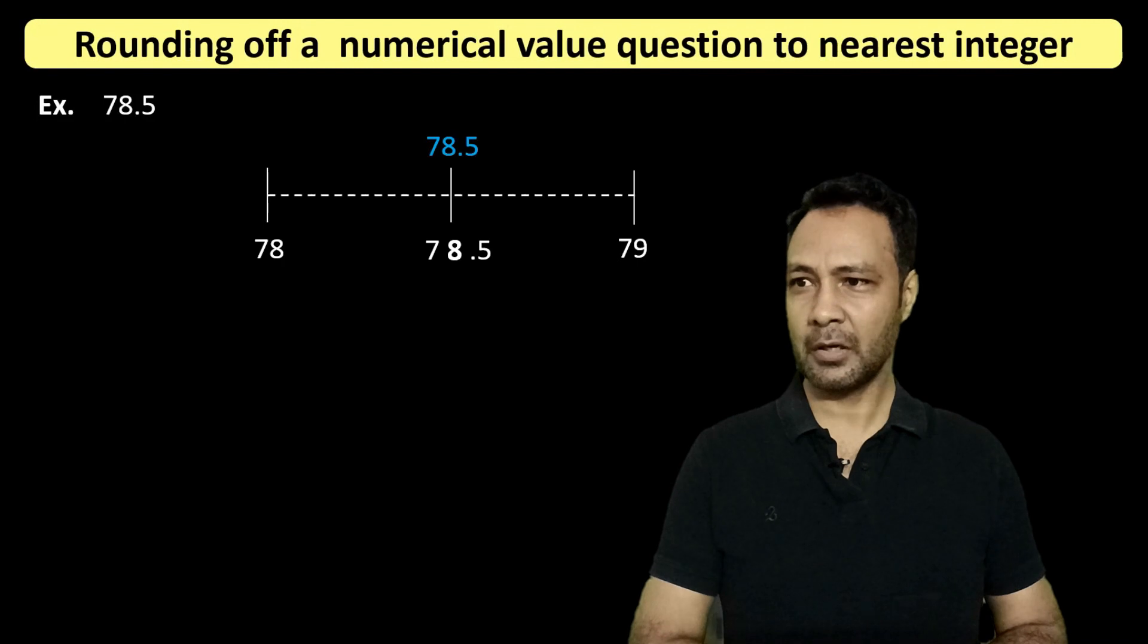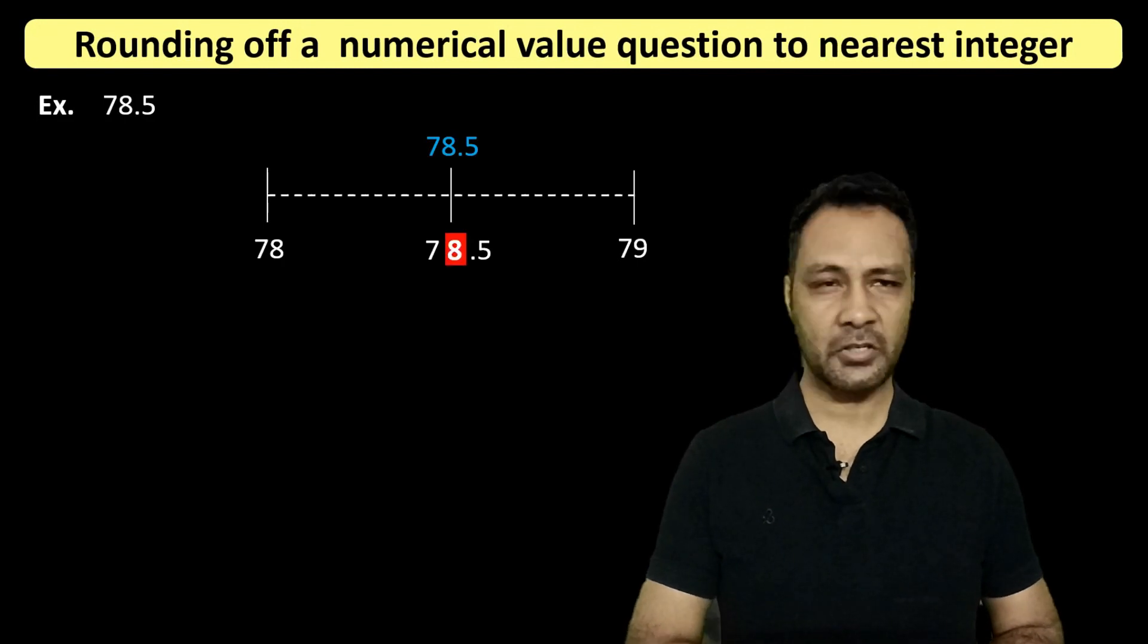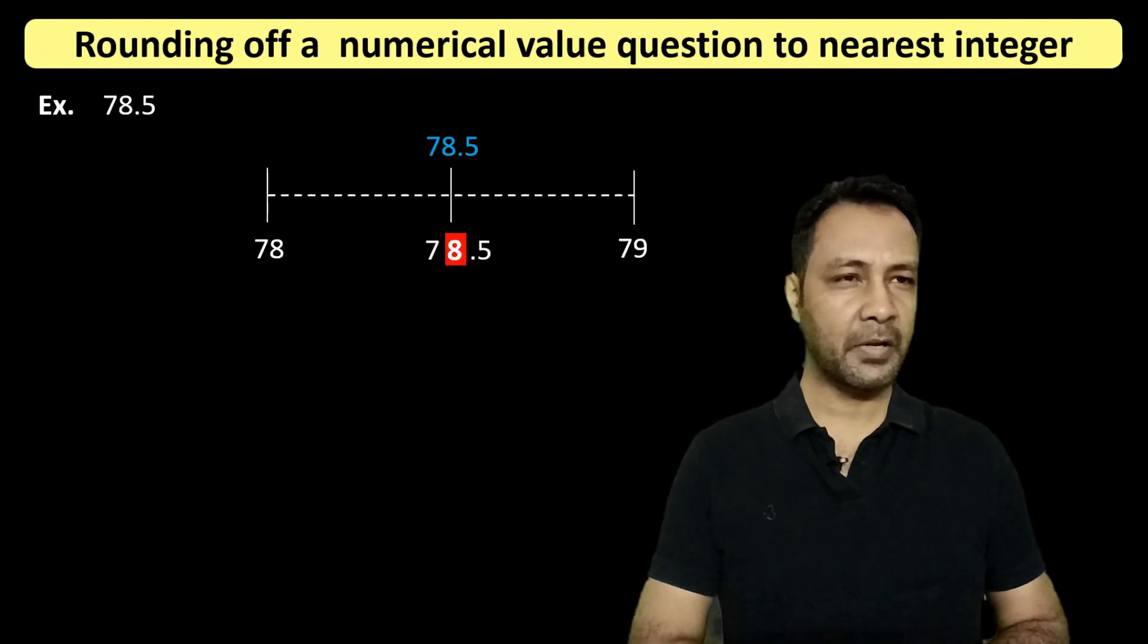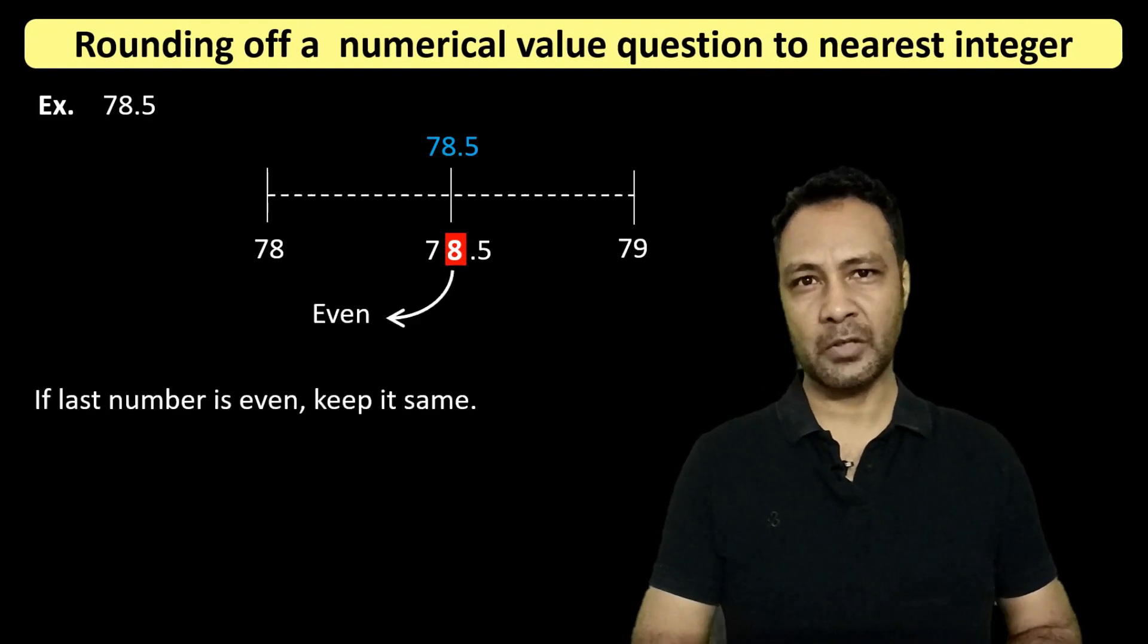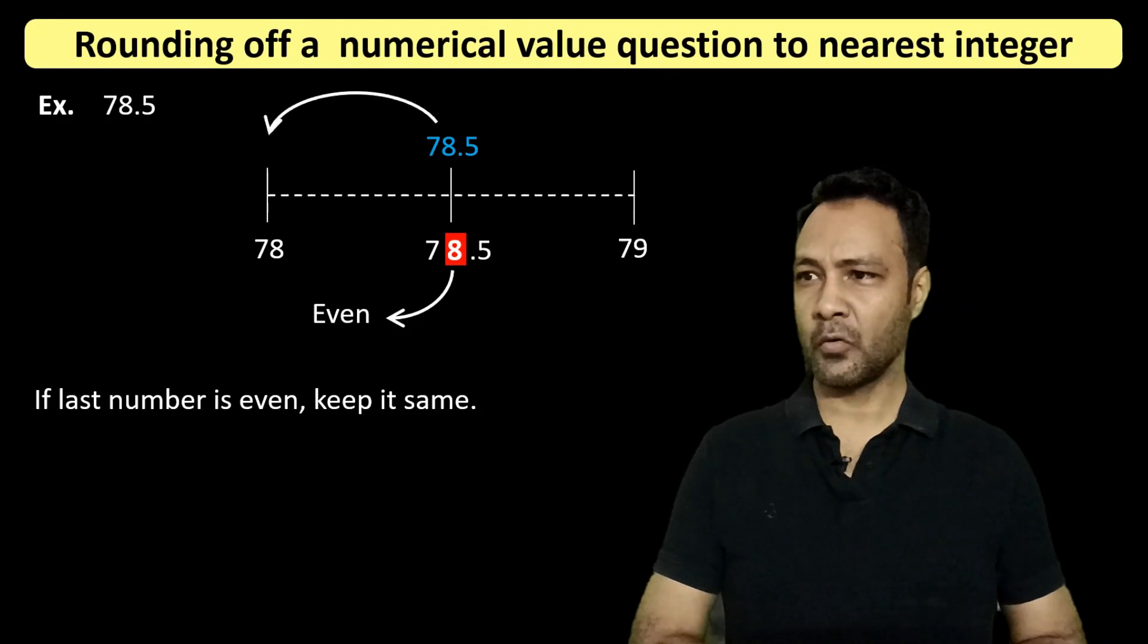We look at the last place. The last place is 8. If this last place is an even integer, then what we do is we keep the last place as it is. So then we will round off 78.5 as 78.